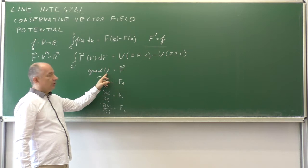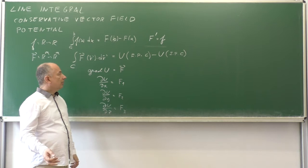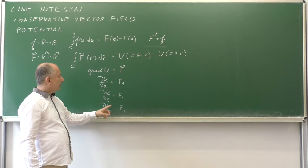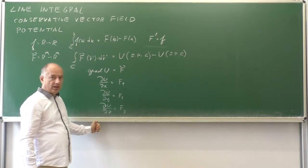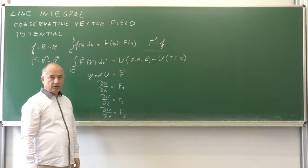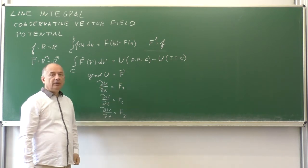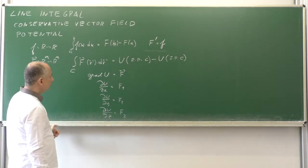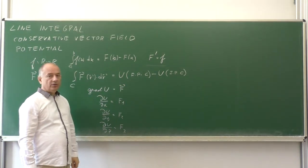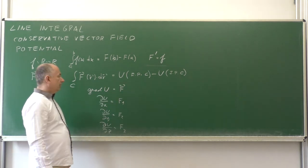The definition is as follows: if a function u is continuous and has continuous derivatives in some open connected set, and if it satisfies the gradient conditions, then we say u is a potential for the vector field F, and we say the vector field F is conservative. The line integral then equals the potential at the end point minus the potential at the initial point of curve C.